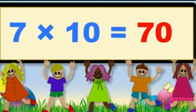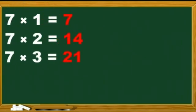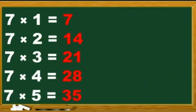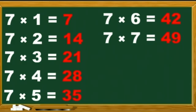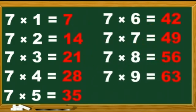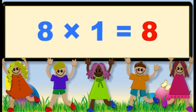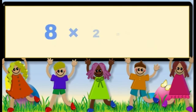7 10s are 70. Let's do it one more time. 7 1s are 7. 7 2s are 14. 7 3s are 21. 7 4s are 28. 7 5s are 35. 7 6s are 42. 7 7s are 49. 7 8s are 56. 7 9s are 63. 7 10s are 70. Table of 8. 8 1s are 8. 8 2s are 16.